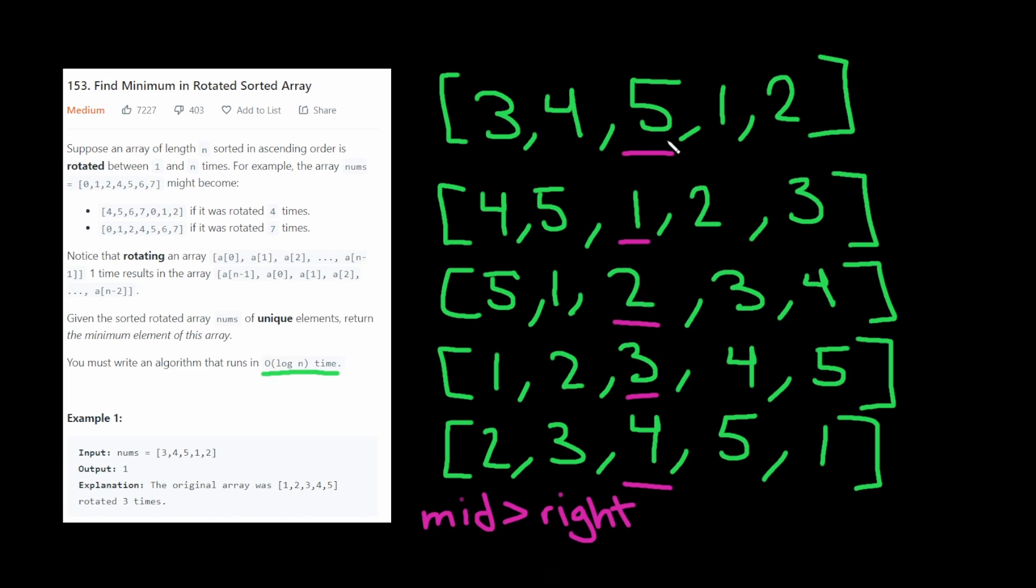So for example, if five is greater than two, that means the inflection point must come after this five. So the array that we consider is one and two.